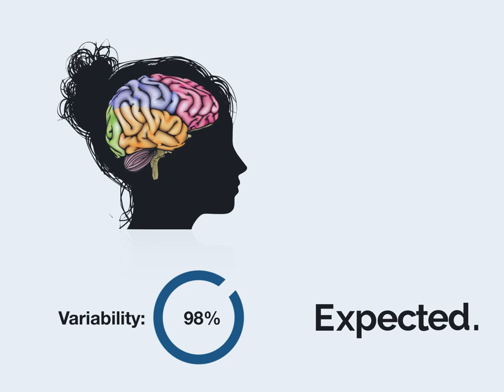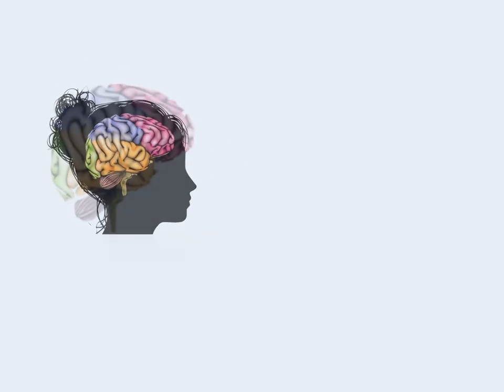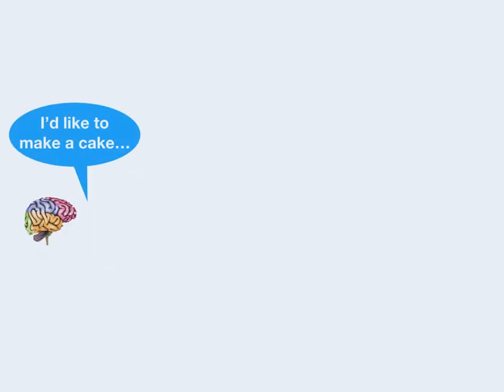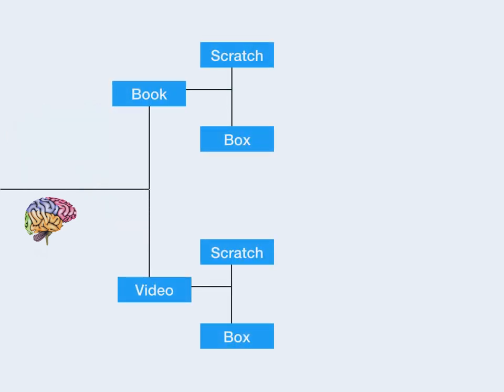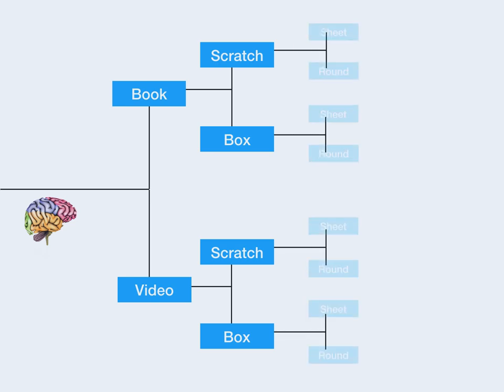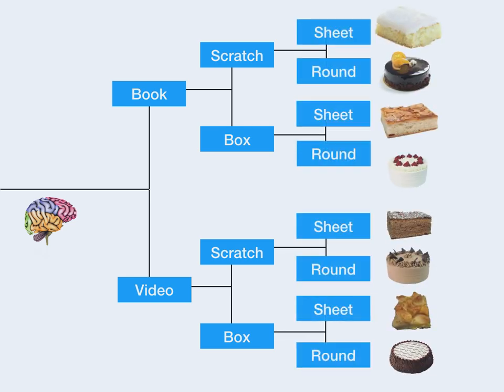Take something as simple as learning to bake a cake. How would you approach this task? Would you reach for a recipe book or watch a YouTube video? Start from scratch or use a box mix? Buy a sheet cake or opt for pie instead? The choice you make depends on many factors.